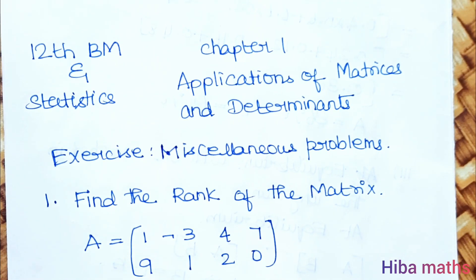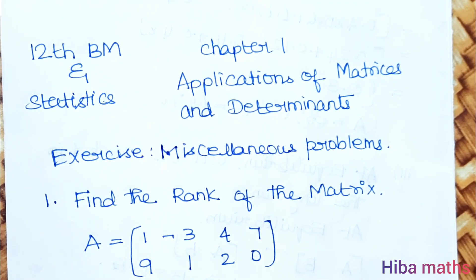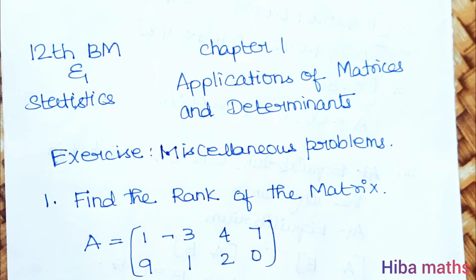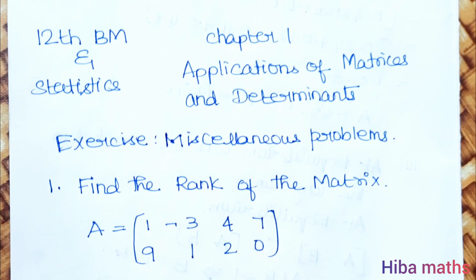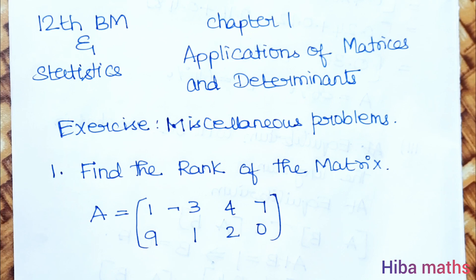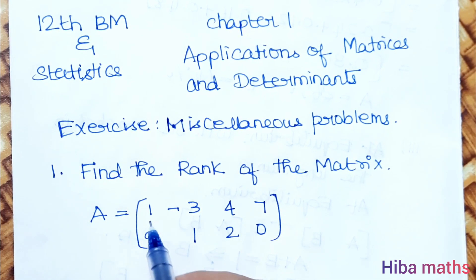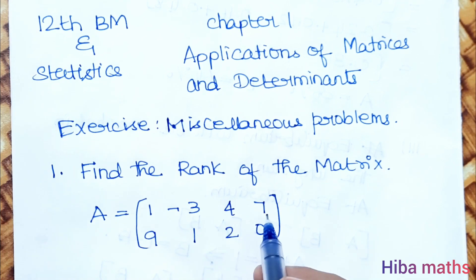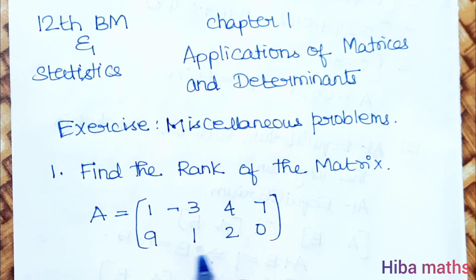Hello students, welcome to Hibamax 12 Standard Business Maths and Statistics, Chapter 1: Application of Matrices and Determinants, Miscellaneous Problems. First question: find the rank of the matrix A equal to [1, -3, -4, 7; -9, -1, -2, 0].